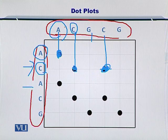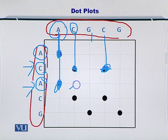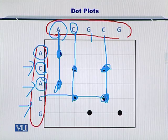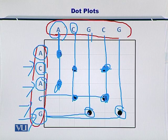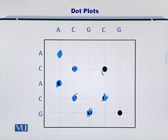Next, you move to the third row. A matches with the A — insert a dot. A did not match C, G, C, or G, so you did not insert any dot on those positions. Next, you move to the fourth row, and C only matched with this C, and C matched with another C as well. In the last row, G is there, so G matches with this G, and G also matches with this other G. You have now plotted dots on all positions where the two nucleotides were matching.